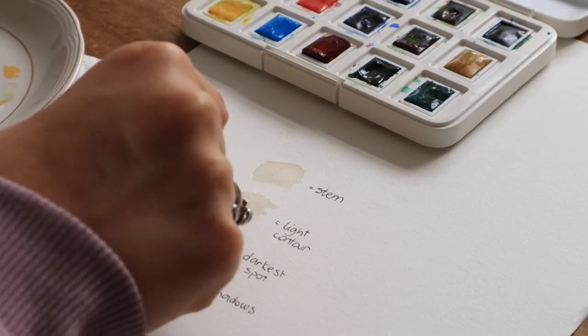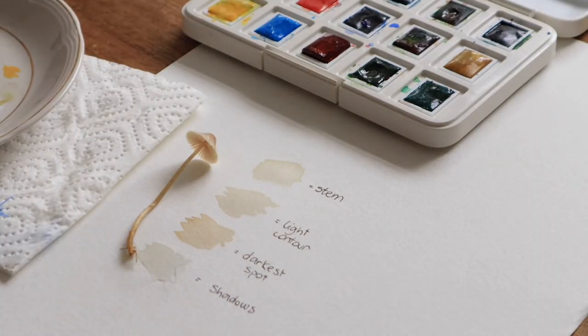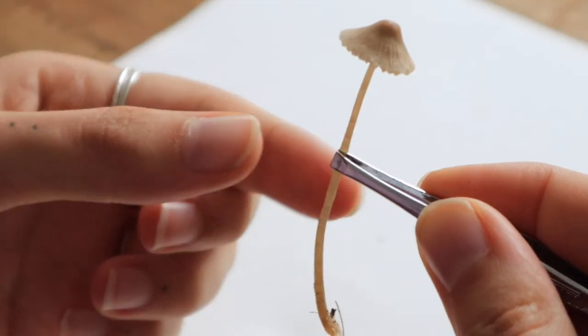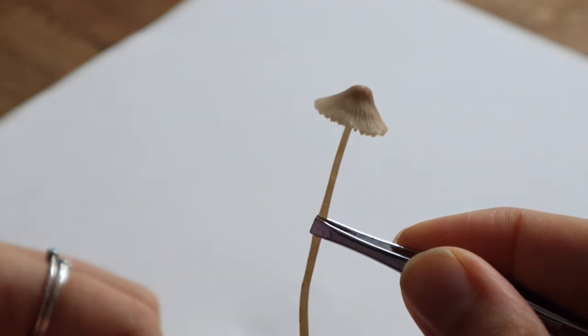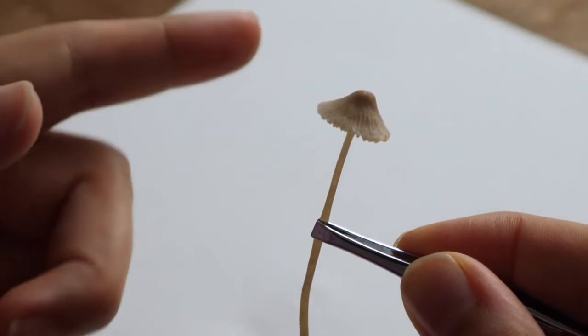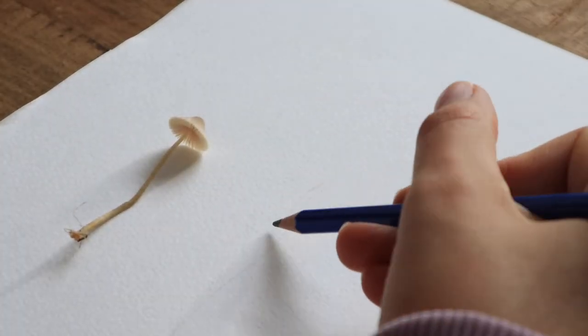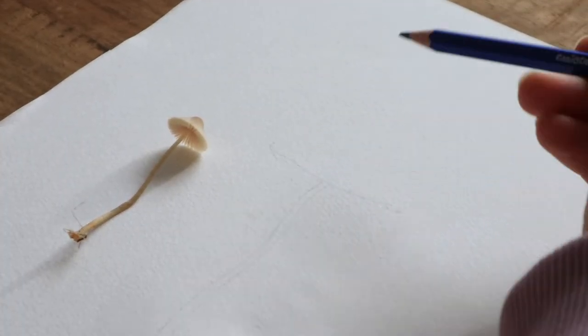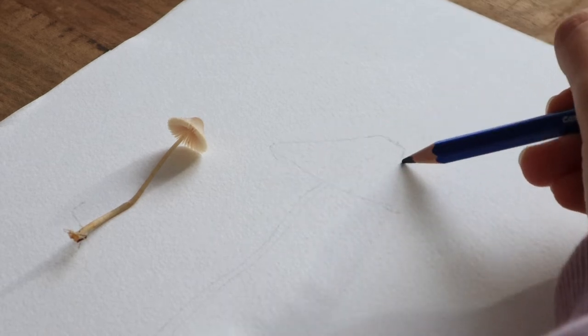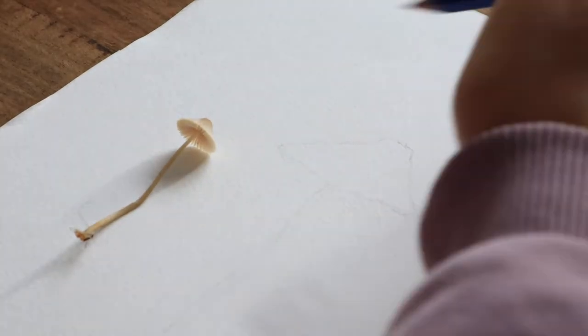Once we've got our colors we can start with sketching. Try to observe the curve of the cap, the a-form skirt and the rounder tip. But don't look for symmetry. It's more about creating an organic and uneven shape. The stem is long, thin and curved and becomes thicker and rounder on the bottom.